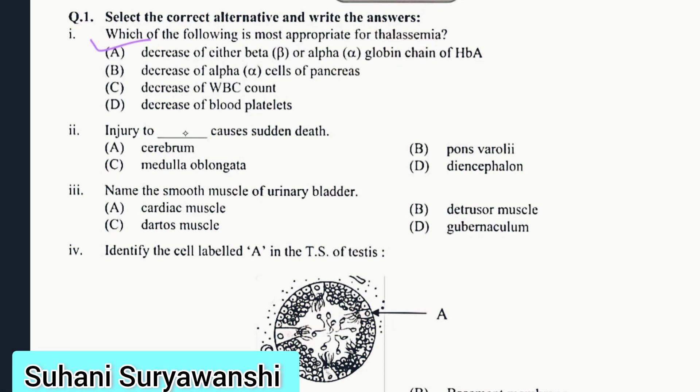Question 2: Injury to blank causes sudden death. Options are cerebrum, pons varoli, medulla oblongata, diencephalon. The correct answer is medulla oblongata. Question 3: Name the smooth muscle of urinary bladder. The correct answer is detrusor muscle.